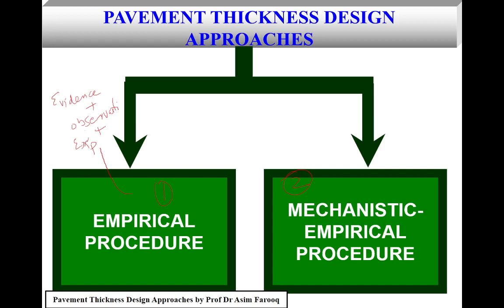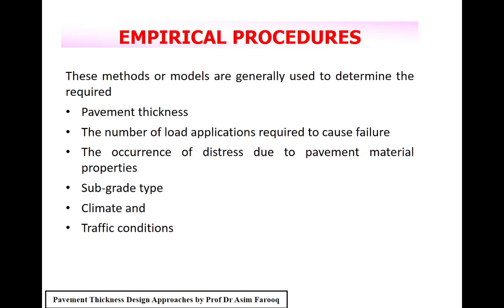The mechanistic pavement design means that a model is used to calculate the response of the pavement to the traffic loads acting on it. Parameters used to determine this response include deflection, stresses, and strain, which result from the input parameters imposed on the supporting layers. Important input parameters in the mechanistic empirical method include contact pressure, wheel load, axle configuration, moving load, and repetition of load.